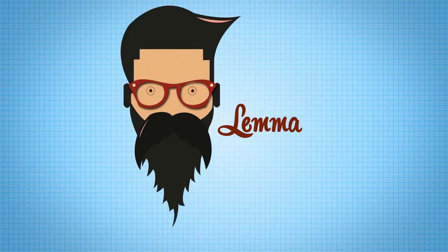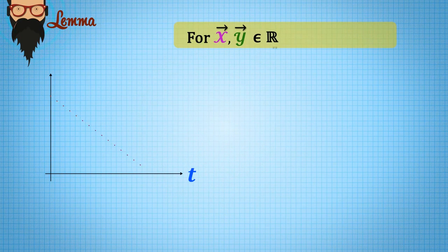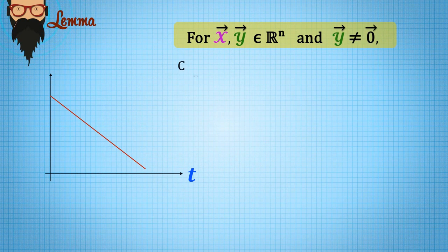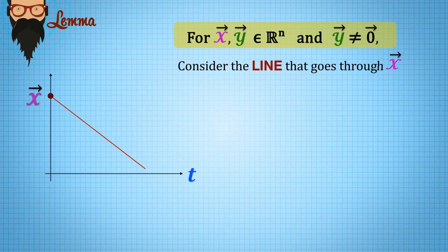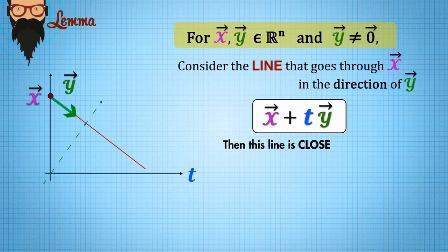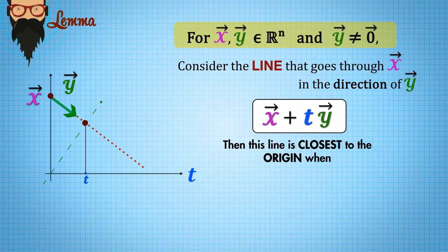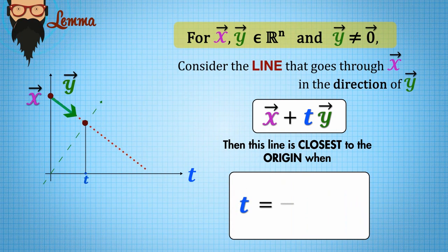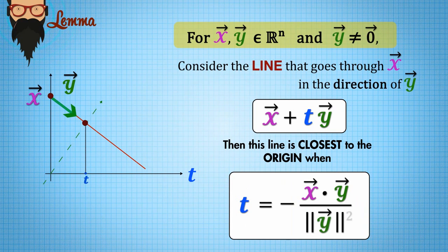Lemma: For x and y in Rn and y not equal to zero, consider the line that goes through vector x in the direction of y. Then this line is closest to the origin when t is equal to negative x dot y over the norm of y squared.